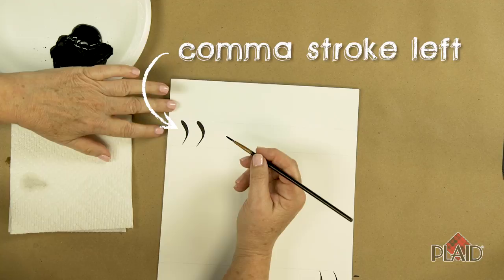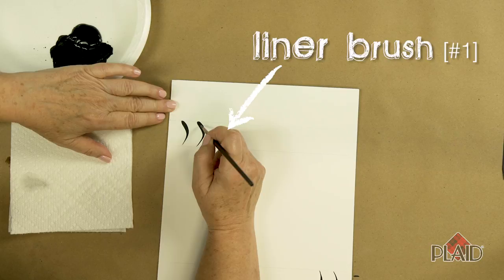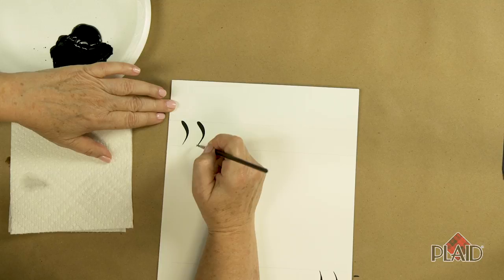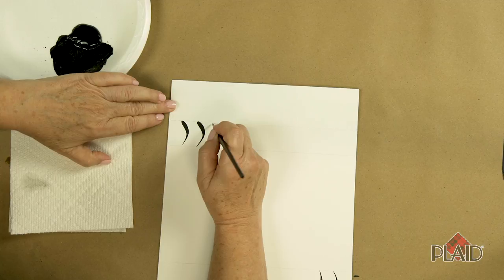I'm going to teach you now how to do a comma stroke angled to the left. We're going to begin the stroke just like the straight stroke at the top, applying pressure, and as we curve and pull that brush towards us, we're going to begin lifting and end up back on the tip of the brush.